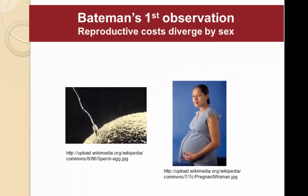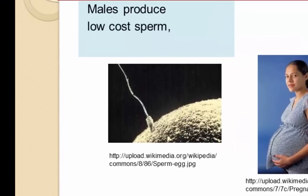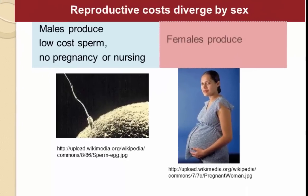Bateman was studying fruit flies, but his arguments are often generalized, so we're going to treat them in a generalized manner and relate them to humans. His first observation was that reproductive costs diverged between the sexes. This is really noticeable in humans: human males produce very low-cost sperm that are tiny relative to the size of an egg and produced in much greater quantities. After conception, males play no role in pregnancy, and after delivery they play no role in nursing.